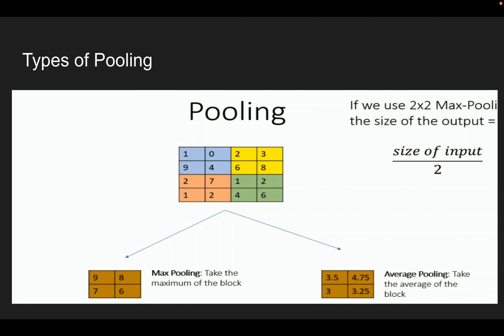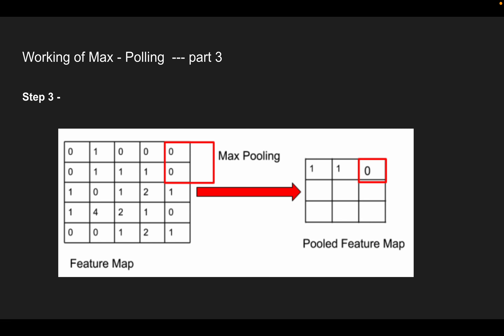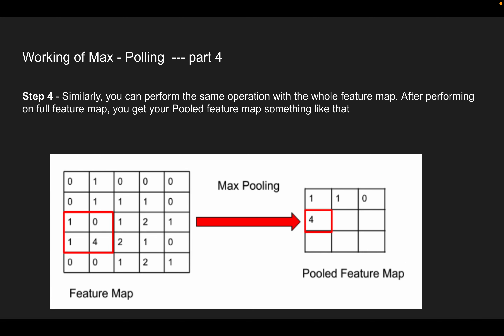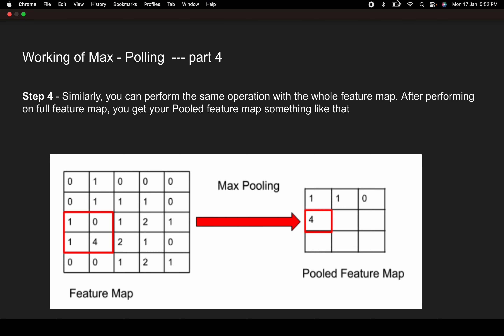That's all for the pooling layer. When we build the model in PyTorch or TensorFlow, you'll be more clear about how pooling works in code — how the image dimension changes after each convolution, ReLU, and max pooling layer. After this video, we'll continue with the flatten layer and the fully connected layer, which are the last two parts of the CNN model. Once you've covered all five operations, your CNN model is complete. Thank you.